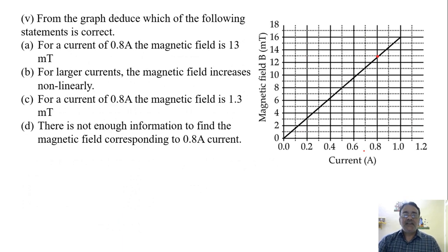Now the last question. From the graph, deduce which of the following statement is correct. For a current of 0.8A, the magnetic field is 13 mT. For larger current, the magnetic field increases non-linearly. Non-linearly means like the square relationship I mentioned earlier. So this is wrong.